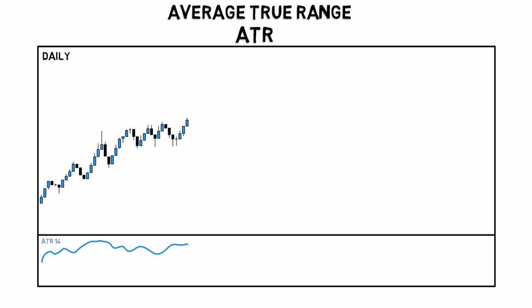Take a look here. The current ATR on a daily chart shows a reading of 0.0153, which means that the average range for the pair is 153 pips a day.